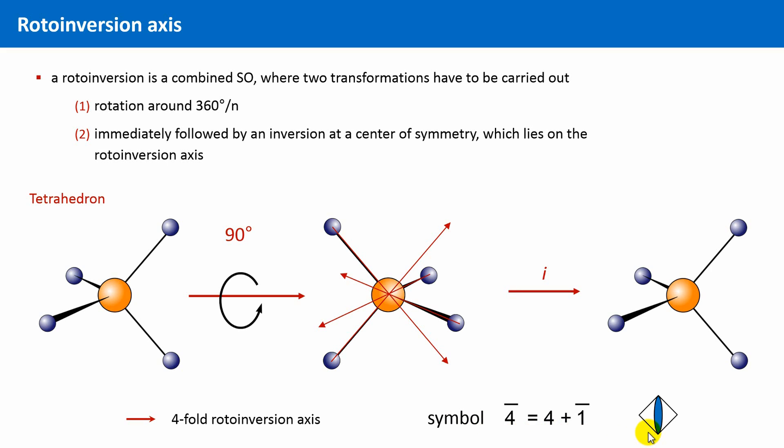What is important here is that this tetrahedron has neither a center of inversion alone, nor a four-fold axis of rotation alone. Only the combination leads to an indistinguishable configuration.